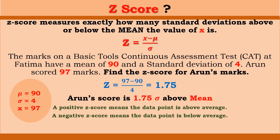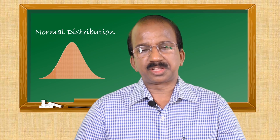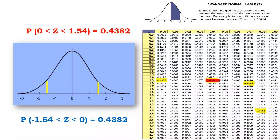So Arun's score is 1.75 standard deviations above the mean. A positive score means the data point is above average and a negative score means the data point is below average. Now if we have a z-score, we can find the probability by locating the probability in the area under the normal curve. For example, the z-score is 1.54 — locating the probability in the table, we have a red shaded area and the table value is 0.4382 for z equals 1.54.